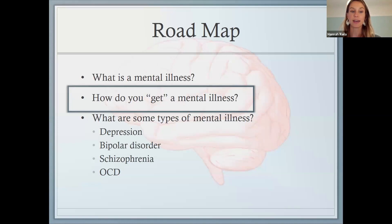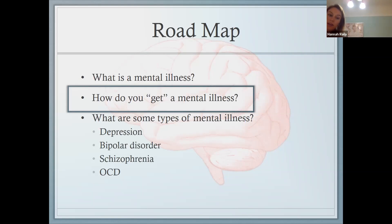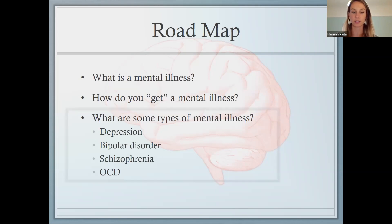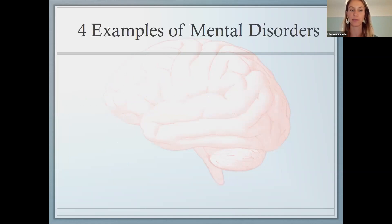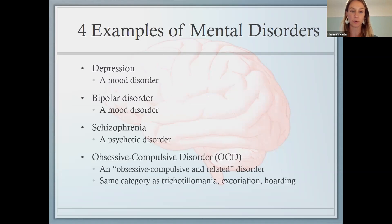We've now asked these broad questions of what is a mental illness and how you get one. We'll next go into some specific types of mental illness to give ourselves a sense of what they look like. We'll talk about depression, bipolar disorder, schizophrenia, and OCD — it's a crash course on all of them. I'm happy to answer more questions at the end; I hope you're left with a bunch.